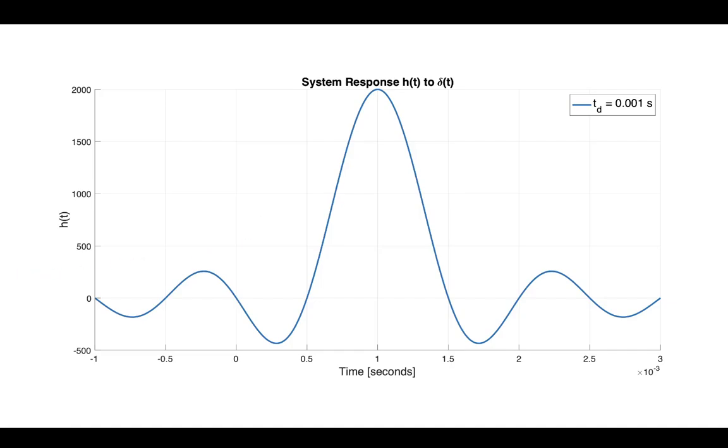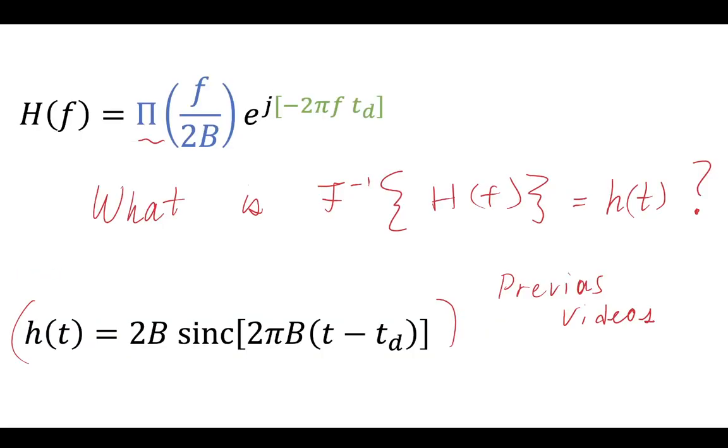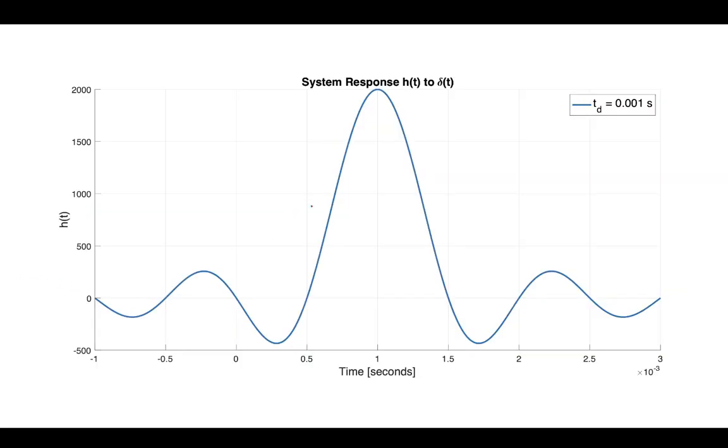So if you took our frequency domain transfer function and we convert this into the time domain, what we see is that we have a sinc function in the time domain, which means that our system response, the way that the system reacts to this input impulse, is going to look like a sinc function.